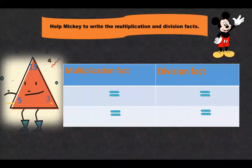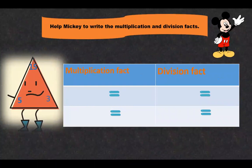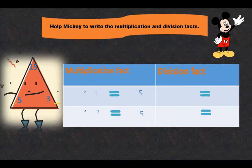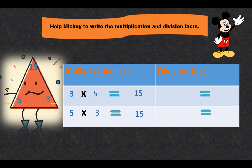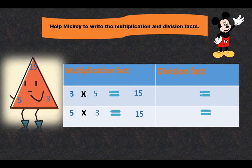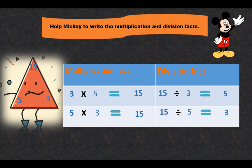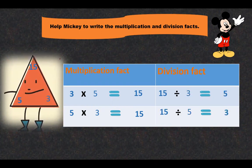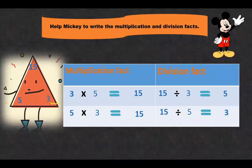Now help Mickey to write the multiplication and division facts. The numbers are five, three, and fifteen. The multiplication facts are 3 times 5 is 15 and 5 times 3 is 15. The division facts are 15 divided by 3 is equal to 5, and 15 divided by 5 is equal to 3.